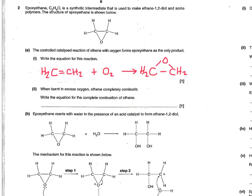We've basically written down what the question told us, but we haven't balanced it yet. I would suggest putting in the appropriate coefficients to balance it for oxygen. The question also says that when burnt in excess oxygen, ethane completely combusts. So depending on the amount of oxygen available, it'll either combust or produce epoxy ethane in the presence of a catalyst. For the complete combustion of ethane, I went through the process of creating two carbon dioxide molecules because of the two carbons, and two water molecules because of the four hydrogens, then made the oxygen fit on the left-hand side.